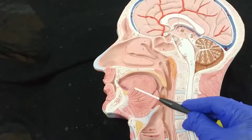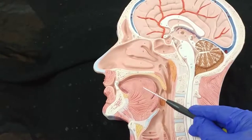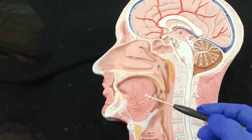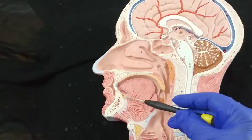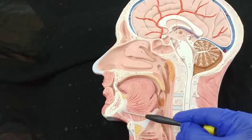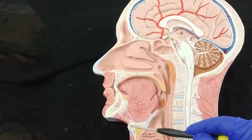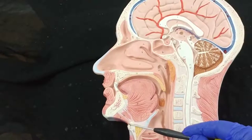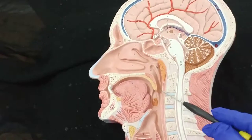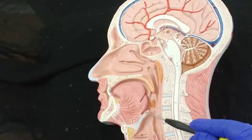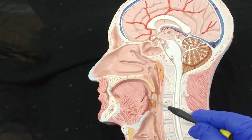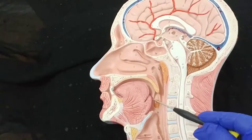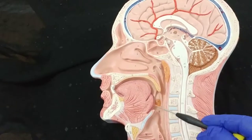This is the genioglossus muscle. Underneath that you will get the hyoid bone. So we have the geniohyoid muscle and the mylohyoid muscle. The tongue has tonsil on the posterior one-third — we call it lingual tonsils — multiple lymphoid tissue here on the posterior aspect of the tongue.